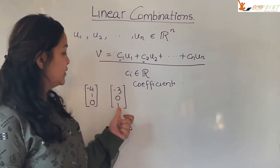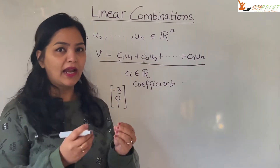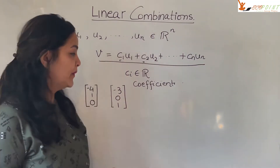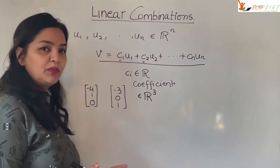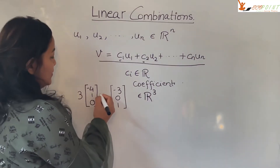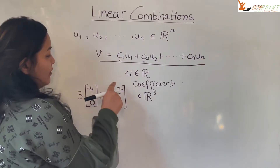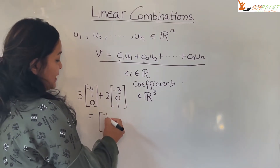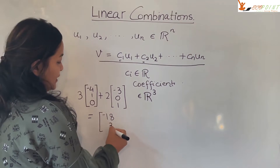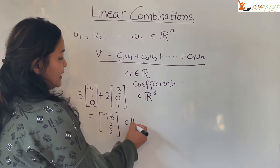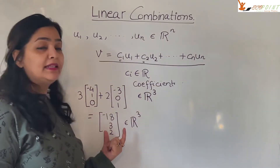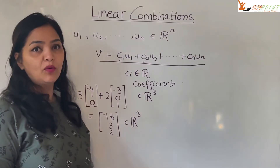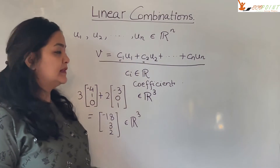Let's take an example. Suppose you have one vector [-4, 1, 0] and another vector [-3, 0, 1]. These are points in R^n; we write them down as column vectors in R3. Now suppose we take 3 times [-4, 1, 0] plus 2 times [-3, 0, 1] — we get the vector [-18, 3, 2], which is again in R3. We say that [-18, 3, 2] is a linear combination of u1 and u2.